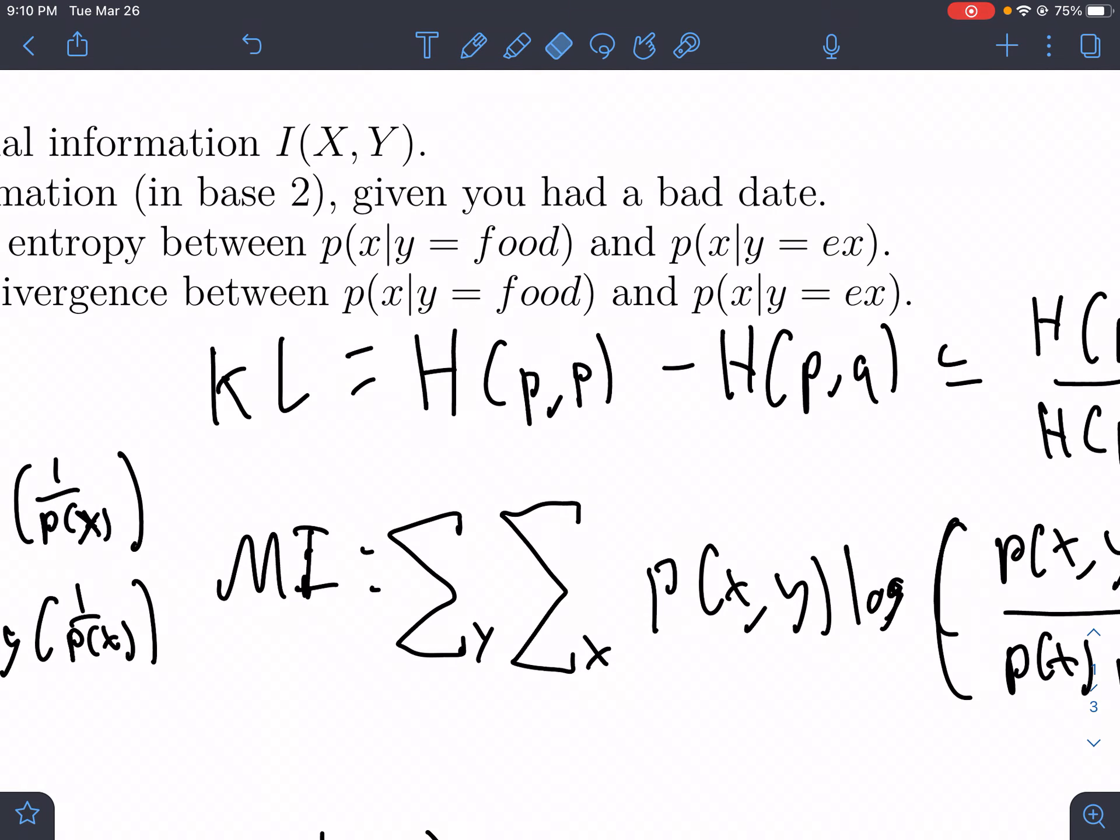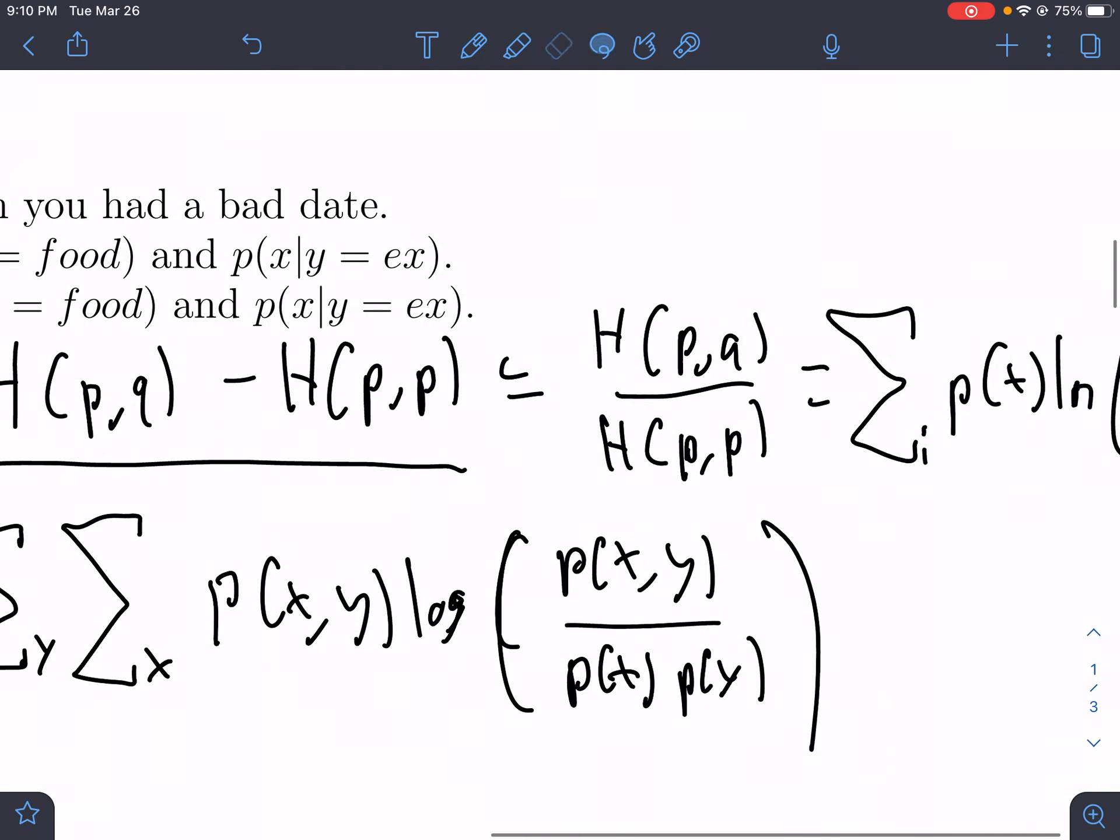The KL divergence formula that I wrote down here is actually incorrect. It is actually H of PQ minus H of PP. So what that means is that this is also wrong. It's H of PP, H of PQ, or no, it's not. It's H of PQ over H of PP.